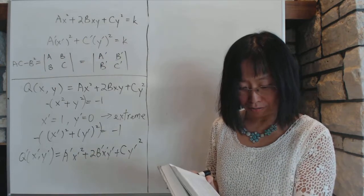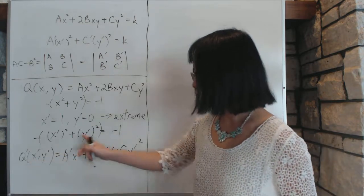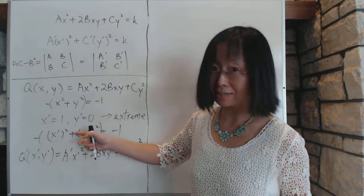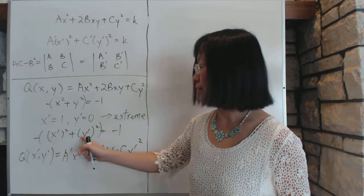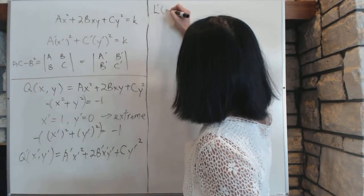And then now we are going to do the Lagrangian's method, with this being the function and the new unit circle, which is identical to the old one, being the constraint. Okay, so let's do the Lagrangian's method, which we'll write down right here.